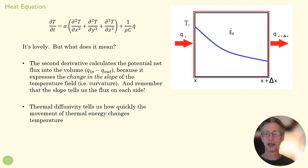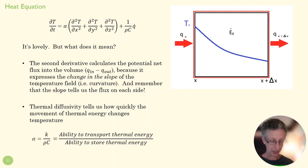So we can write out, in a nice easily defined way, what that alpha means. K is the ability to move thermal energy. Rho c is the ability to store thermal energy. If this is big, temperature changes quickly. If this is big, temperature is going to change more slowly. And there it is—that's the heat equation.